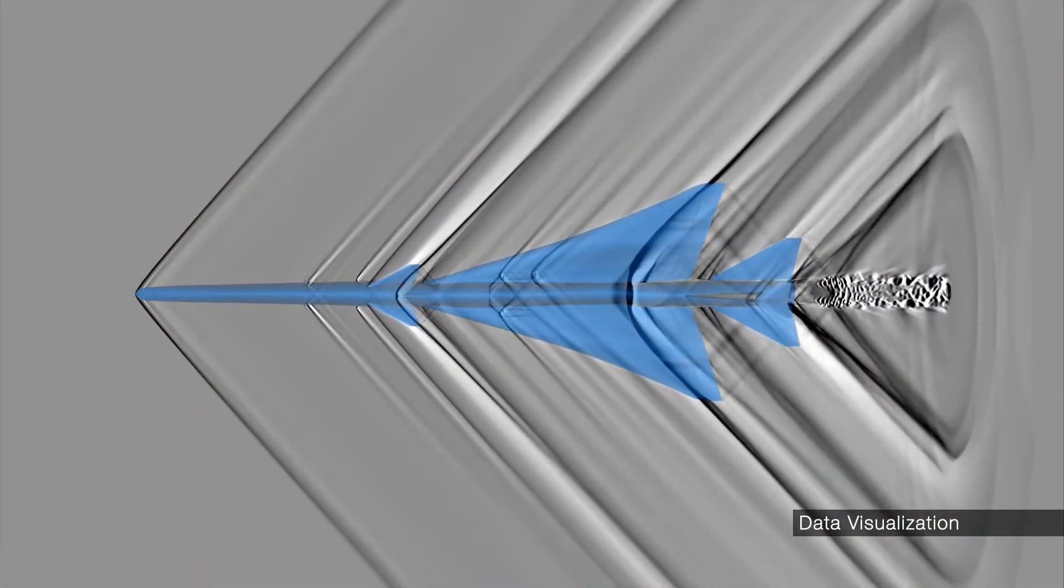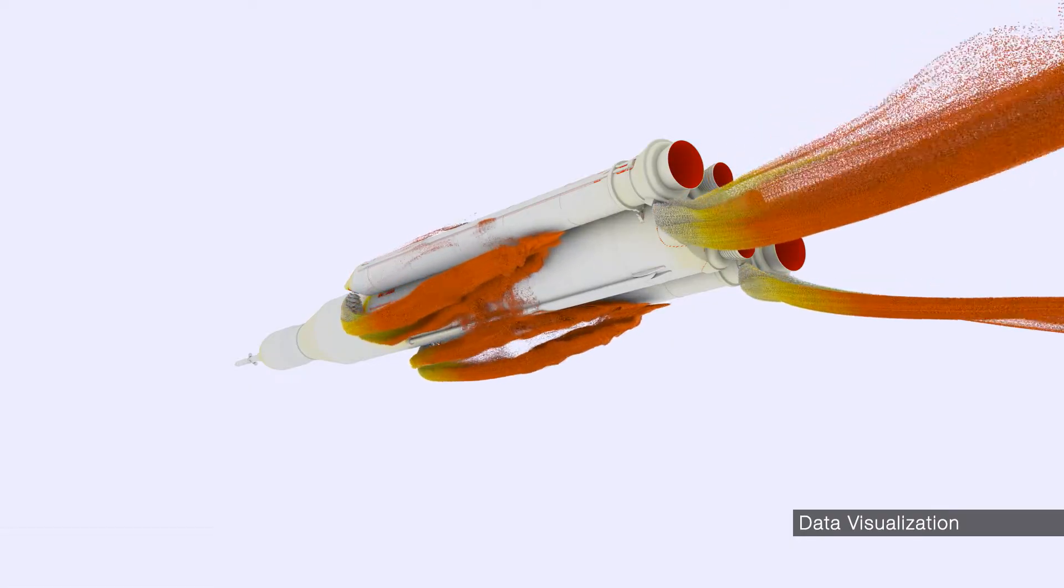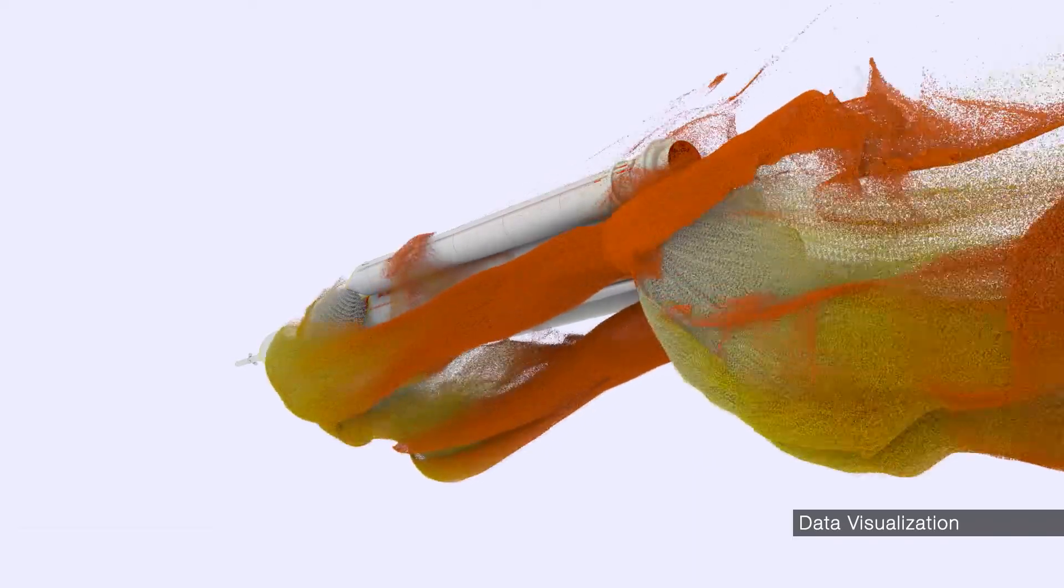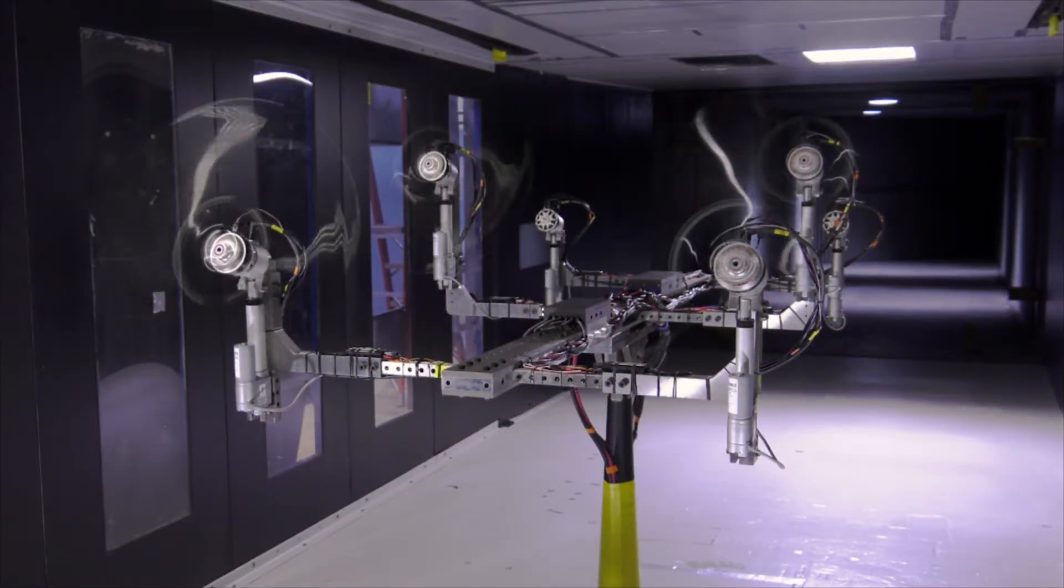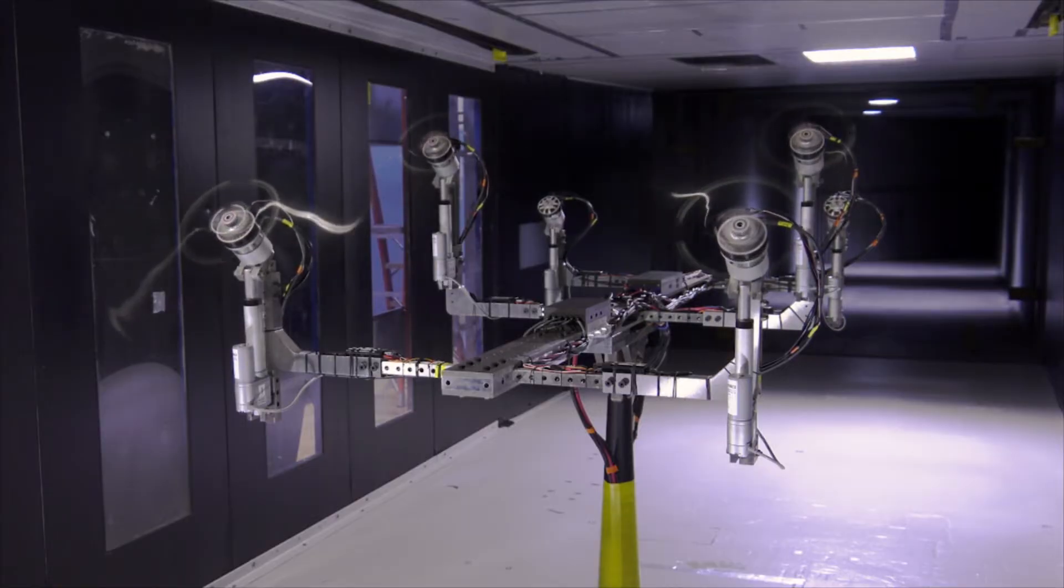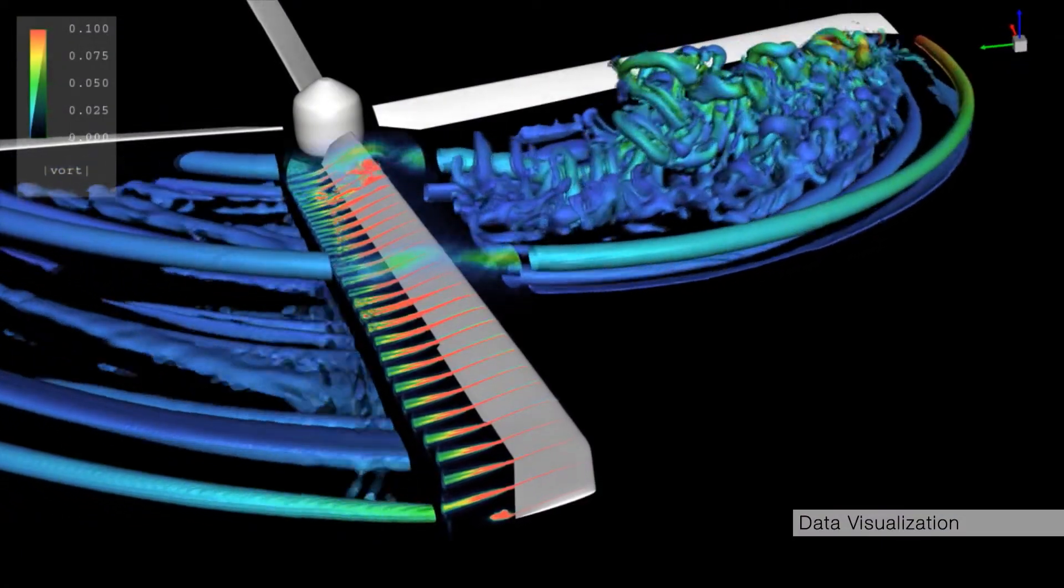This unsteady air pressure vibrates and shakes vehicles, limiting how fast they can travel. Most vehicles are designed with extra structural strength to withstand these forces, partly because unsteady air is difficult to measure and challenging to simulate with software tools.